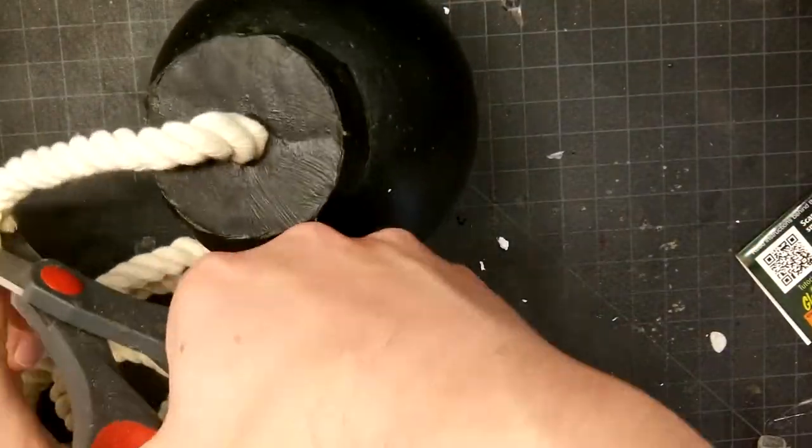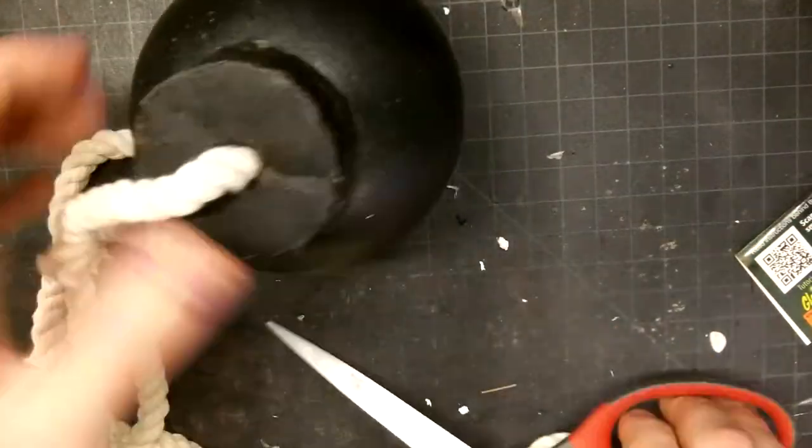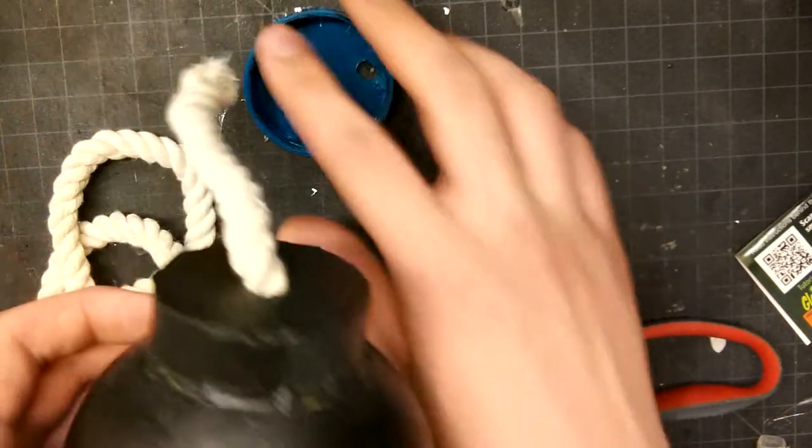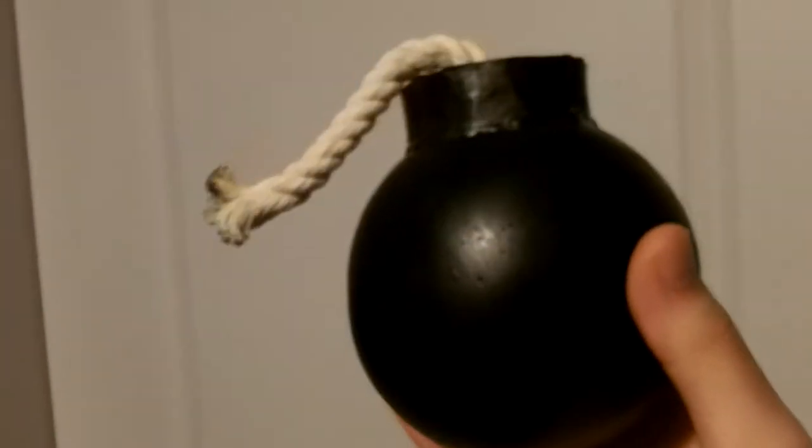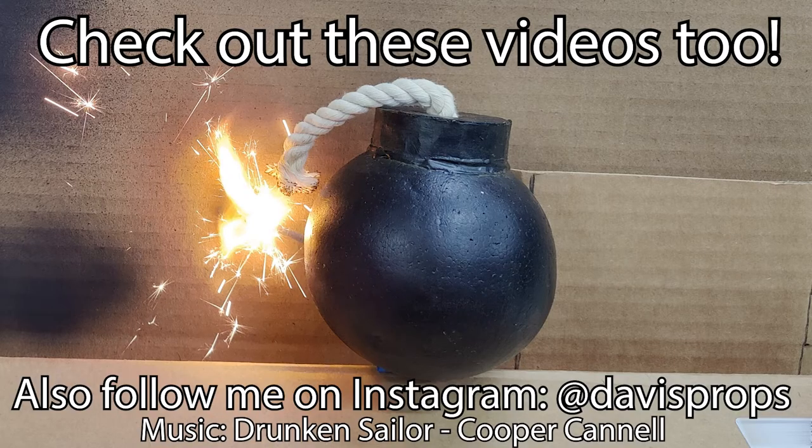And then I cut off a piece of rope as the fuse. I did give it a light brown wash but you can't really tell. So yeah, that's how you make a pirate grenade bomb thing. And I'll see you guys next time.